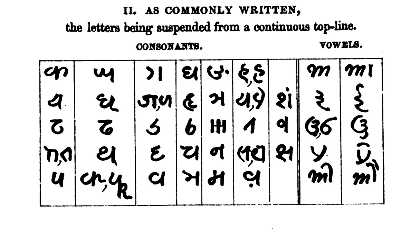Among the three scripts widely used in the Hindi belt, Kaithi was widely perceived to be neutral, as it was used by both Hindus and Muslims alike for day-to-day correspondence, financial, and administrative activities, while Devanagari was used by Hindus and Persian script by Muslims for religious literature and education.